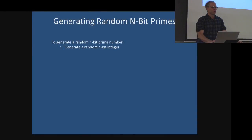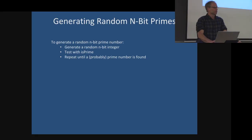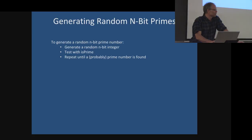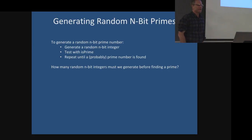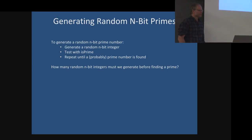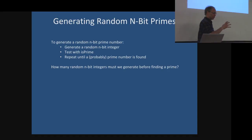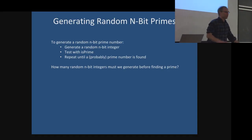Here's our plan: to generate a random n-bit prime number, generate a random n-bit integer, test it with our is-prime method, and repeat until we find something that's probably prime. You can control the risk level you're willing to accept. But what if n-bit prime numbers are extremely rare? That means we'd have to test number after number before we luck onto a prime. So the next question is: how common are prime numbers?